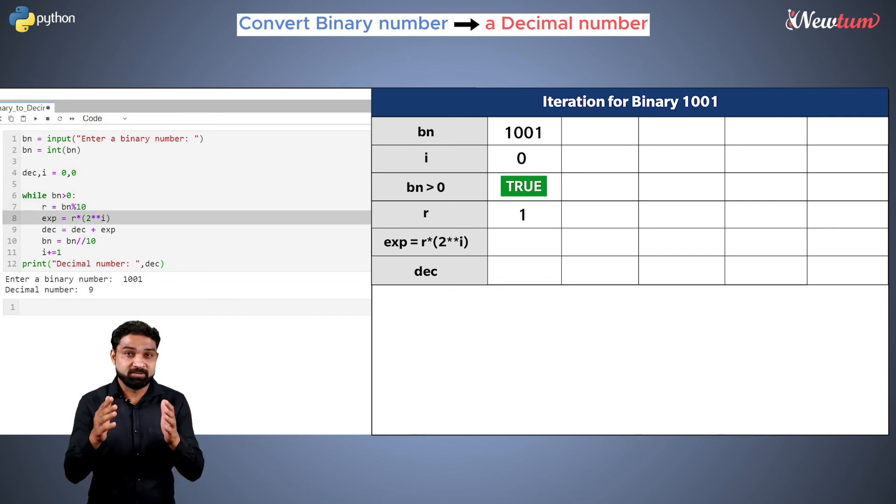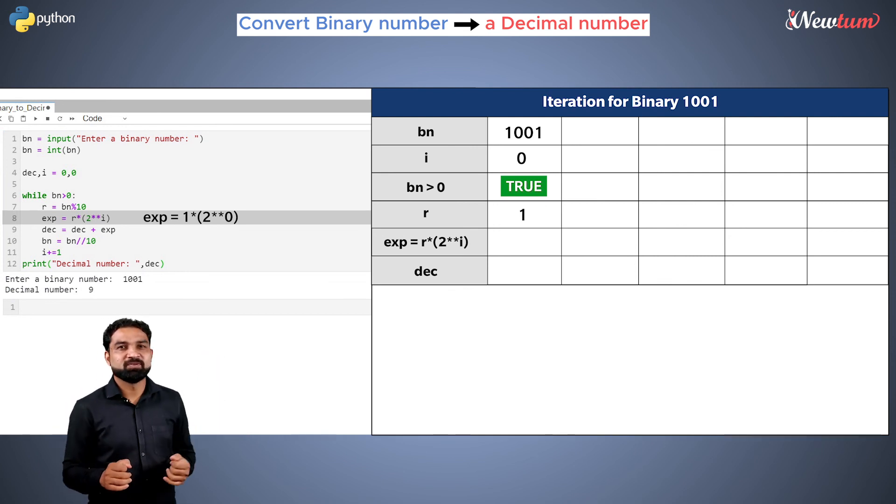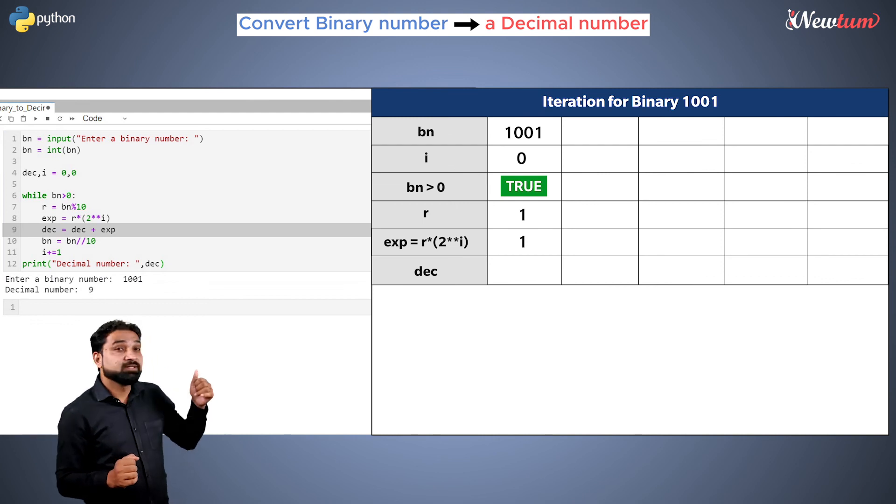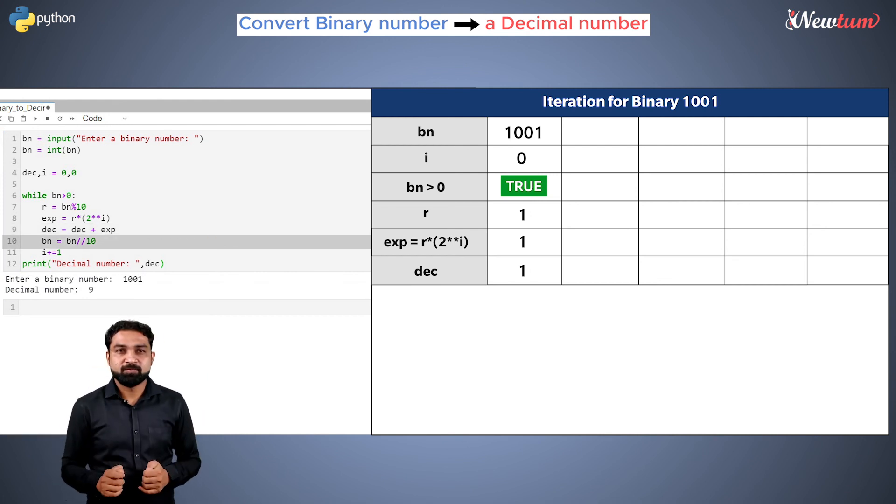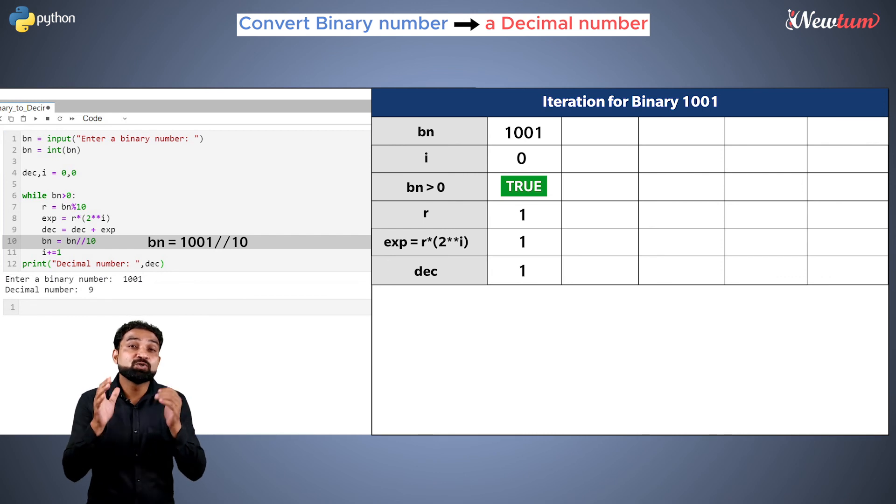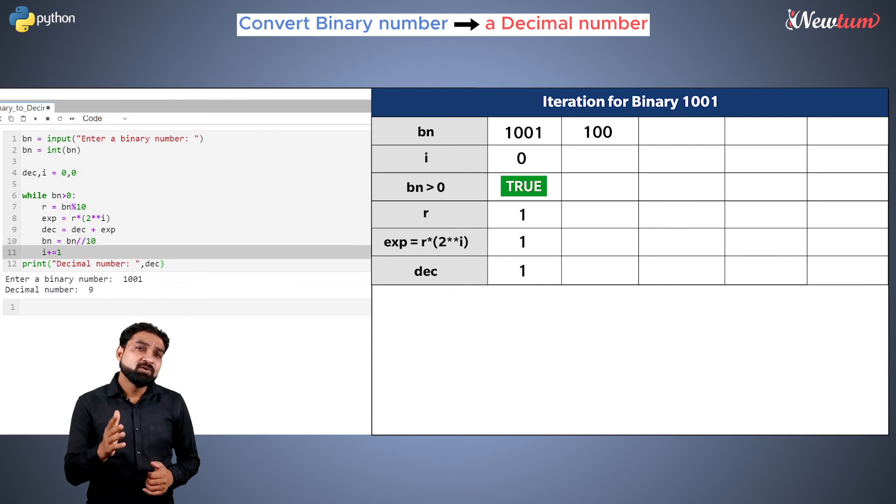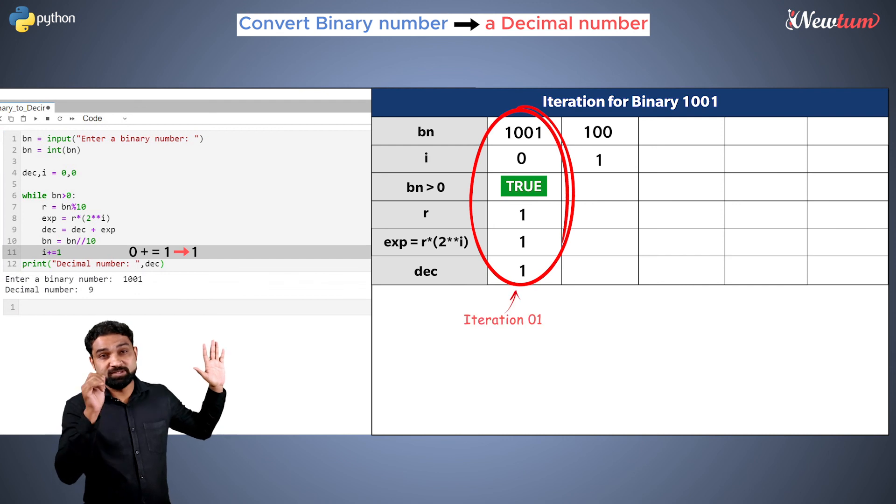Then the calculation is done, that is 1 into 2 raised to 0. The output is 1 and it is stored in the exp variable. In the next line, the exp value is added to the decimal variable. Then we use the floor operator, which will give us the quotient in the variable bn, that is 100. Then we increment the counter variable i. Hope you understood this first iteration.